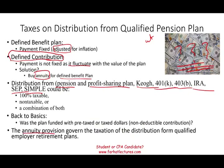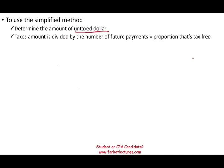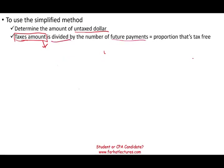We're going to use the annuity provision for the taxation of these distributions. To use the simplified method, first determine the amount of untaxed dollars — the amount that was deductible and you did not pay taxes on. Then find the amount that was taxed — the amount you could not deduct, the non-deductible contribution for which you received no tax benefit. Take that after-tax amount and divide it by the number of future payments. That gives you the proportion that is tax-free.